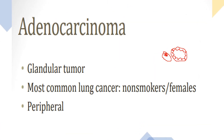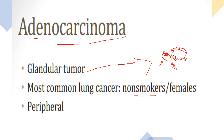Adenocarcinoma produces gland-like structures under the microscope — you may find signet ring cells or mucus outside the cells. It is commonly associated with non-smokers, unlike squamous cell and small cell carcinomas. In female smokers, adenocarcinoma is the most likely lung cancer type. It is found in the peripheral areas of the lung, unlike the central location of squamous cell and small cell carcinomas.